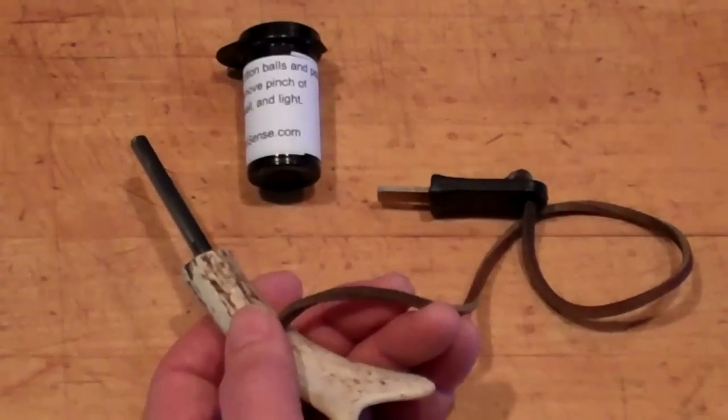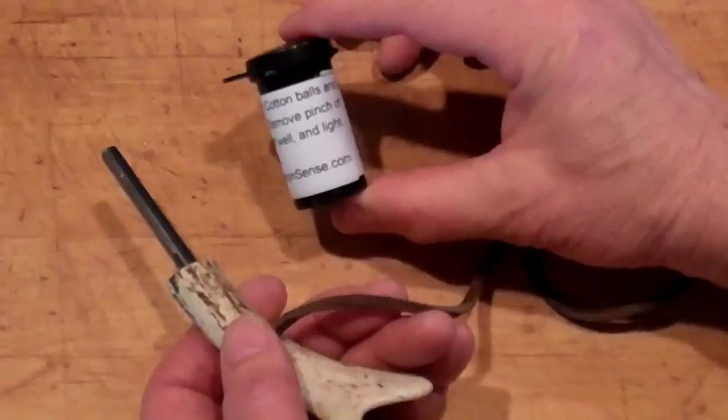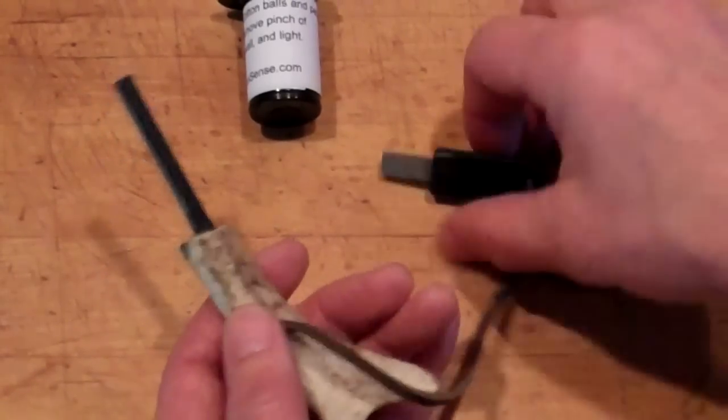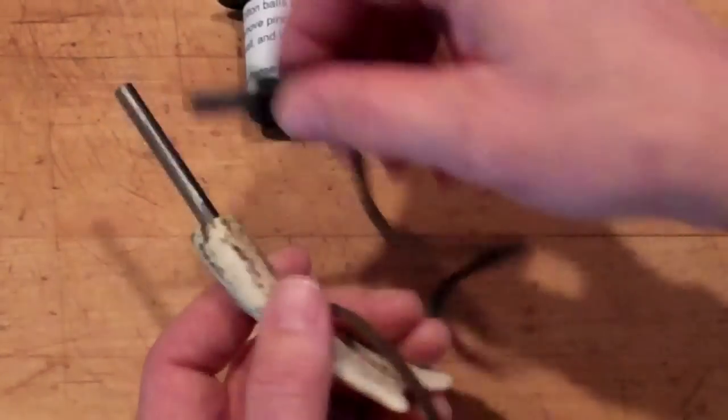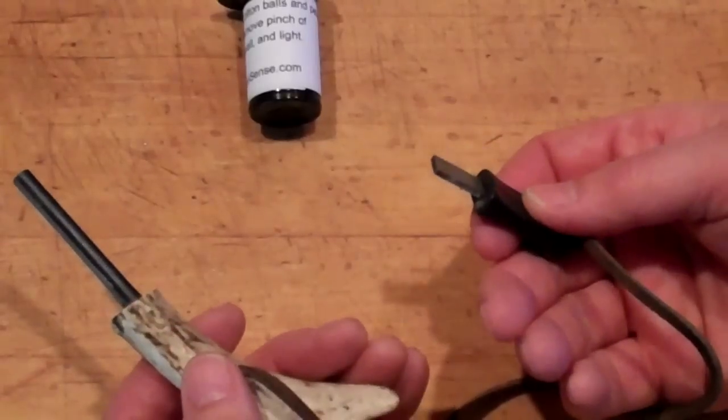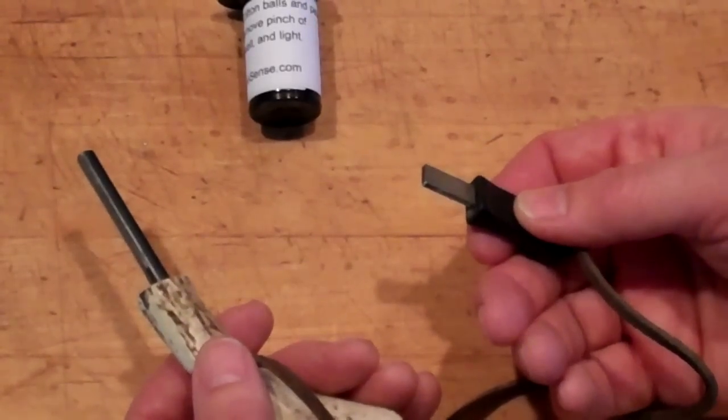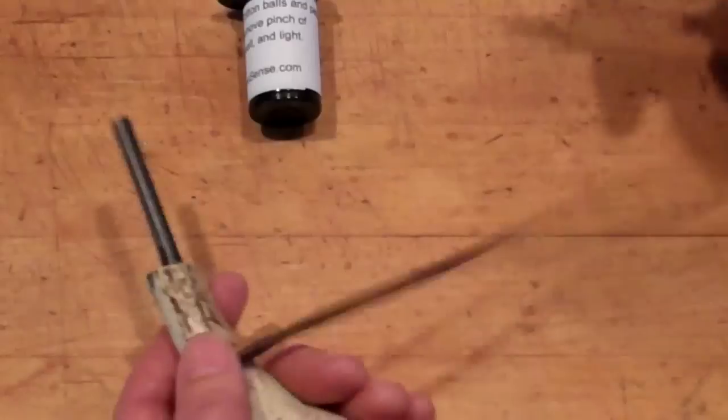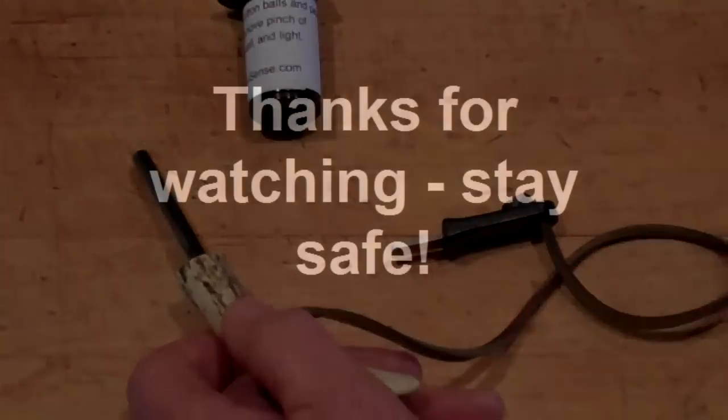So to sum it all up, it's pretty simple. Get some good tinder - cotton balls and Vaseline. Get a good ferrocerium rod and make sure you get the residue off before you need it. And then get a good striker. When you have all these, practice, that way when you need this survival skill, you'll already have it.